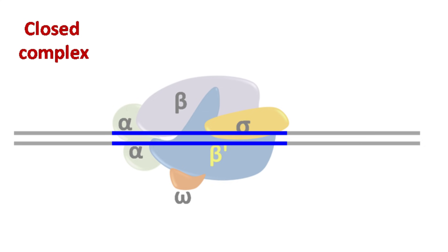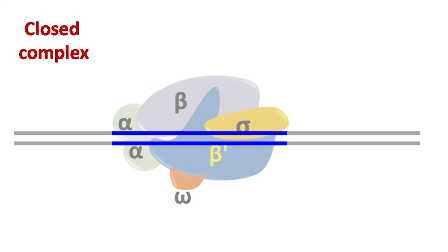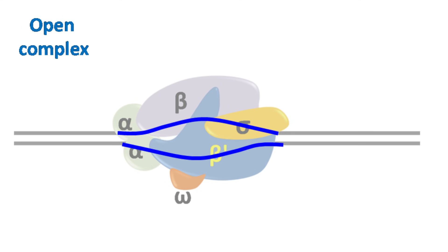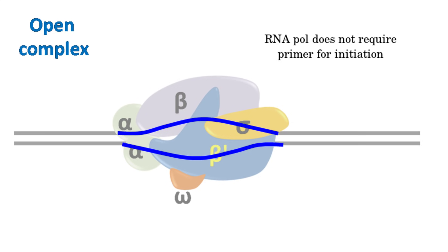In the next step, the DNA strands near the transcription start site unwind to form an open complex. Once the open complex is formed, the enzyme now starts adding RNTPs on the template DNA. It should be noted that unlike DNA polymerase, RNA polymerase does not require a primer for the initiation of transcription.